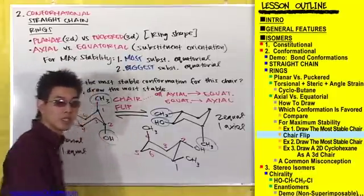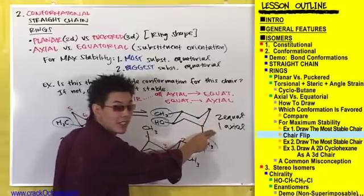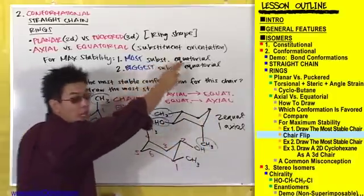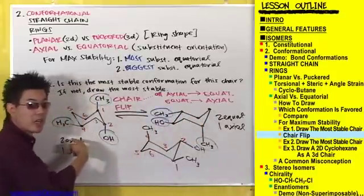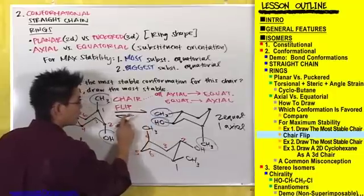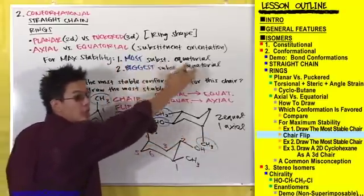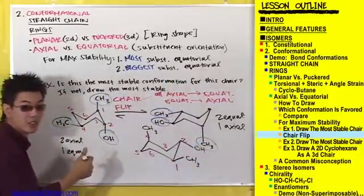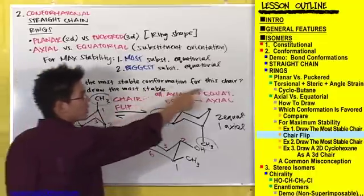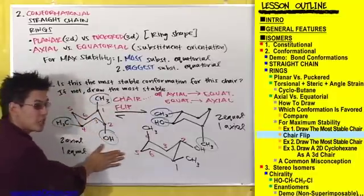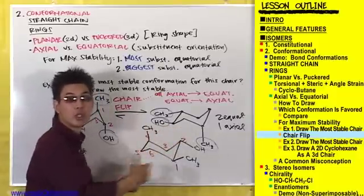So which one of these conformations is more stable — the one on the left with two axials and one equatorial substituent, or this one on the right with two equatorial substituents and one axial? The one on the right, because most substituents are equatorial. So we would draw this equilibrium arrow more towards the right to show that this conformation is favored over this conformation, because more substituents are equatorial. This original conformation was not the most stable; the flipped conformation is more stable because it has more equatorial substituents.